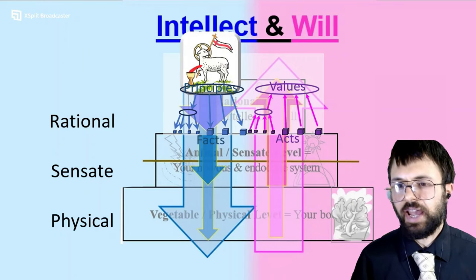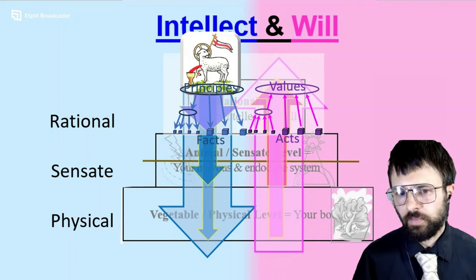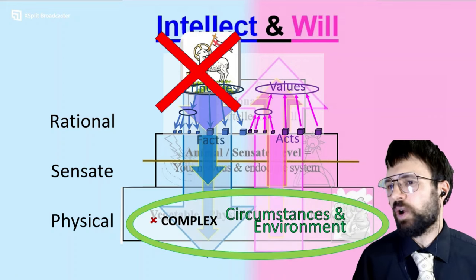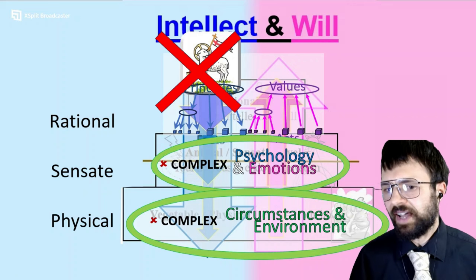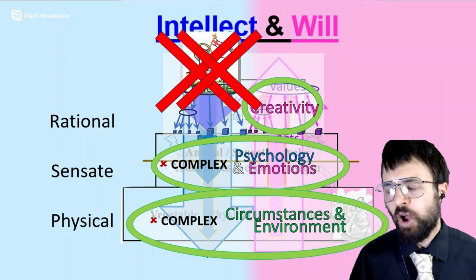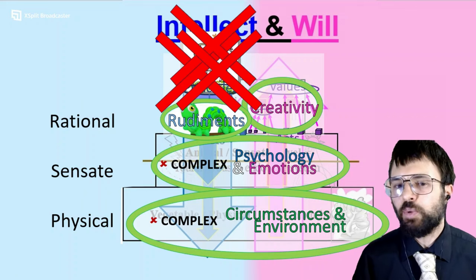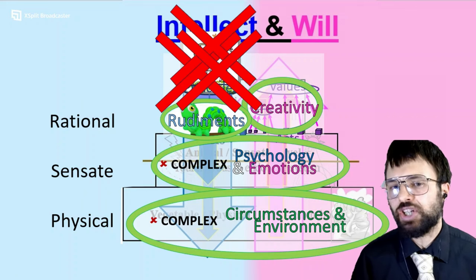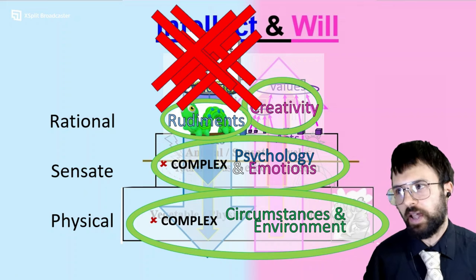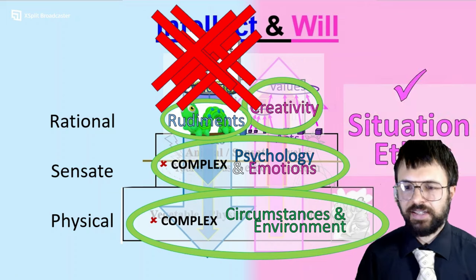So here we finally have the three integral parts of situation ethics: we want to claim that circumstances and environment are too complex because we don't want to face the light; we want to claim that psychology and emotions are too because we don't want to face the light; we want to dwell on our own creativity; and we want to inch by inch through application after application. So there you have the essence of situation ethics.